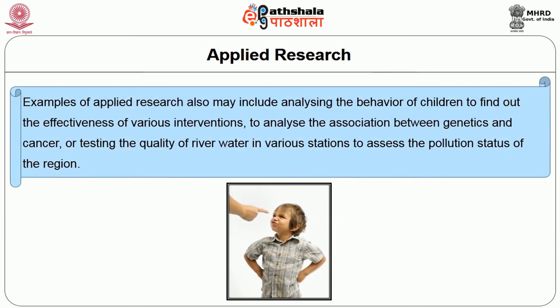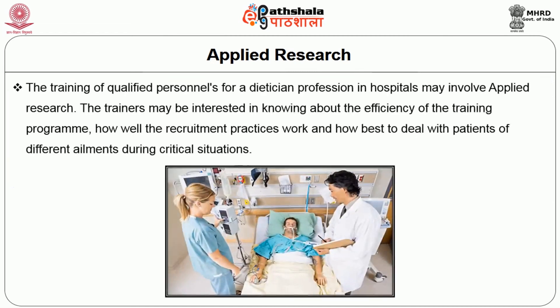Examples of applied research may also include analyzing the behavior of children to find out the effectiveness of various interventions, analyzing the association between genetics and cancer, or testing the quality of river water in various stations to assess the pollution status of a region. The training of qualified personnel for a dietitian profession in hospitals may involve applied research. The trainers may be interested in knowing about the efficiency of the training program, how well the recruitment practices work, and how best to deal with patients of different ailments during critical situations. This type of research always helps in finding answers to problems facing the society, usually carried out by a company, agency or an individual to solve a specific problem.